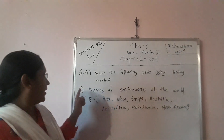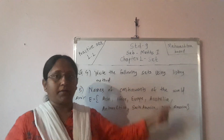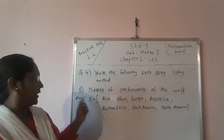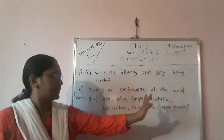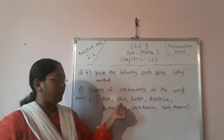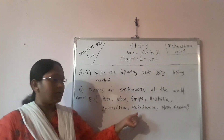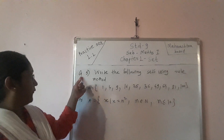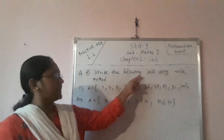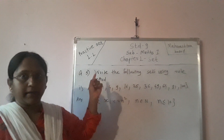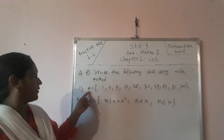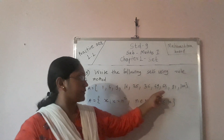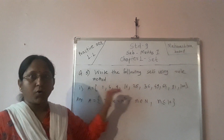Next sub-question: names of the continents of the world. I declare that set as E. E = {Asia, Africa, Europe, Australia, Antarctica, South America, North America}. Then next question — question number five: write the following sets using rule method. The first sub-question: A = {1, 4, 9, 16, 25, 36, 49, 64, 81, 100}. These are the elements of set A.